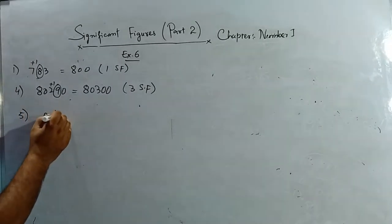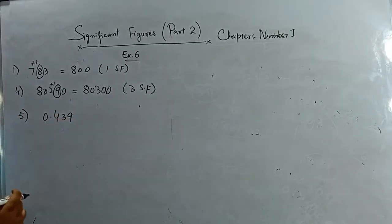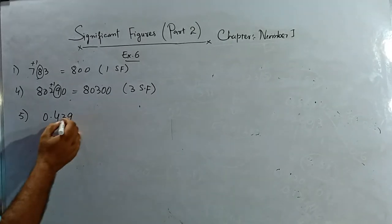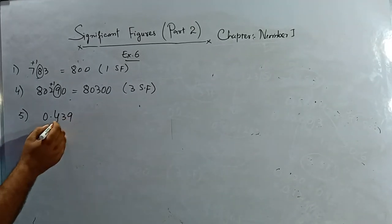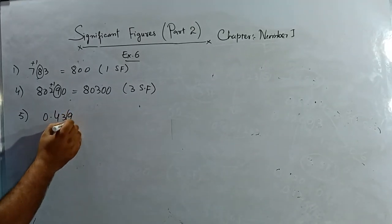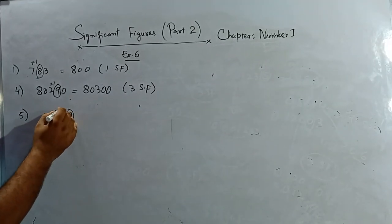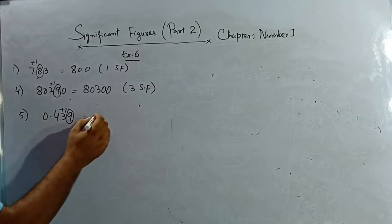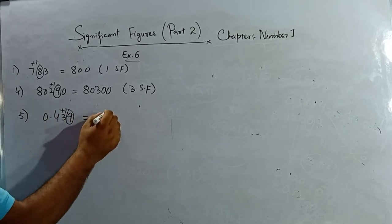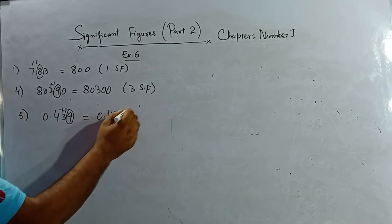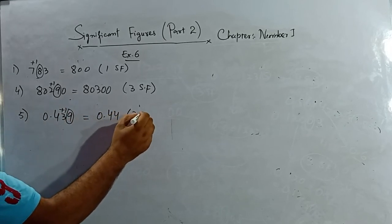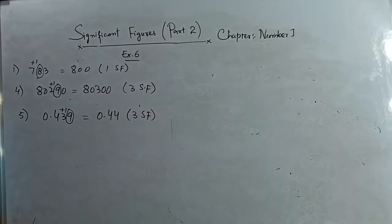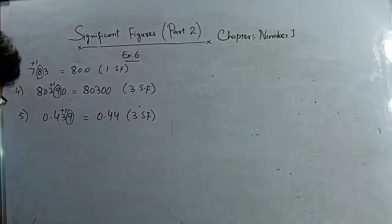Question number 5: 0.439, write this number correct to two significant figures. I check the third one — yes it is greater, so I add one. The answer is 0.44, corrected to two significant figures.